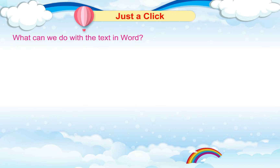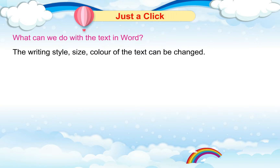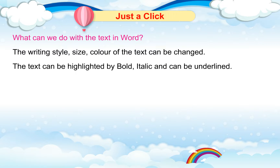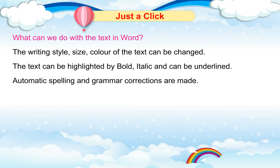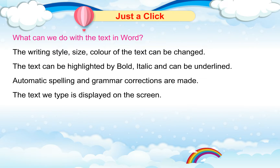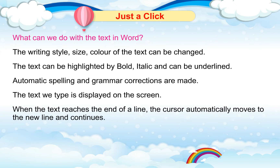What can we do with the text in Word? The writing style, size, and color of the text can be changed. The text can be highlighted by bold, italic, and can be underlined. Automatic spelling and grammar corrections are made. The text we type is displayed on the screen. When the text reaches the end of a line, the cursor automatically moves to the next line and continues.